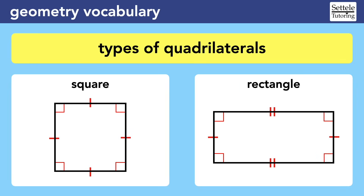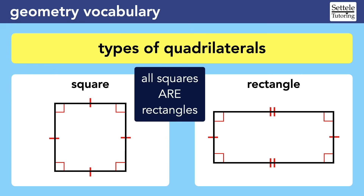We can also quickly talk about the different types of quadrilaterals, which are four-sided shapes. For the SAT, you're almost always going to be working with squares and rectangles. In both cases, all angles are right angles, meaning 90 degrees. In a square, all of the sides are the same exact length. In a rectangle, the opposite sides are congruent. In both cases, the opposite sides are also parallel. Remember that all squares are rectangles, so if you need to invent a random rectangle for a question, it might be easier to just make it a square.